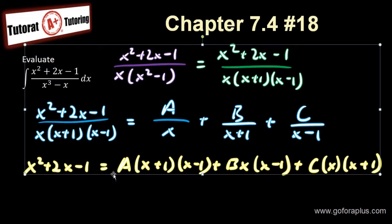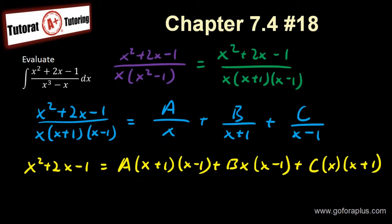Let me let x equals 0. If I let x equal to 0, I get minus 1 on the left side equals to, this is 0, this is 0, so I have 1 here, minus 1 here, so I get minus A. So I know that A is equal to 1.